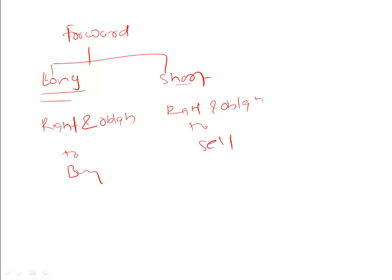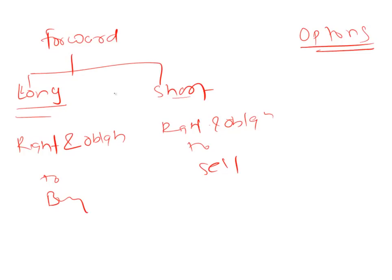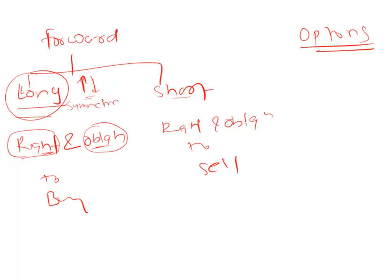The major difference with options as against forwards is that when you are long on a forward contract, you have right and obligation both. When prices increase you benefit — it's a right — but when prices decrease you lose — it's an obligation. Since it can go either way, we say these contracts are symmetrical in nature; the payoffs can be on both sides.